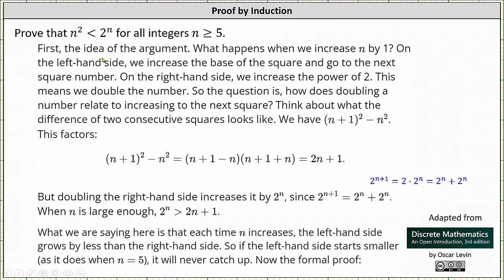Let's begin by discussing the argument. What happens when we increase n by 1? On the left side where we have n squared, we increase the base of the square and go to the next square number. On the right side where we have 2 to the power of n, we increase the power of 2, which means we double the number. So the question is: how does doubling a number relate to increasing to the next square?